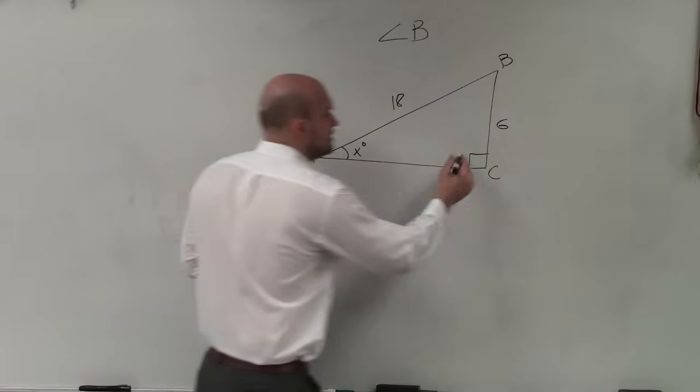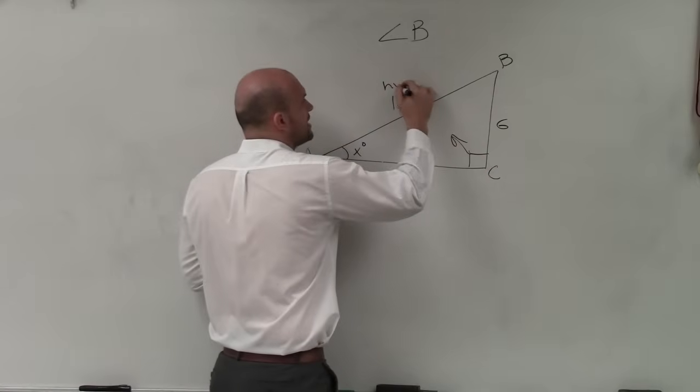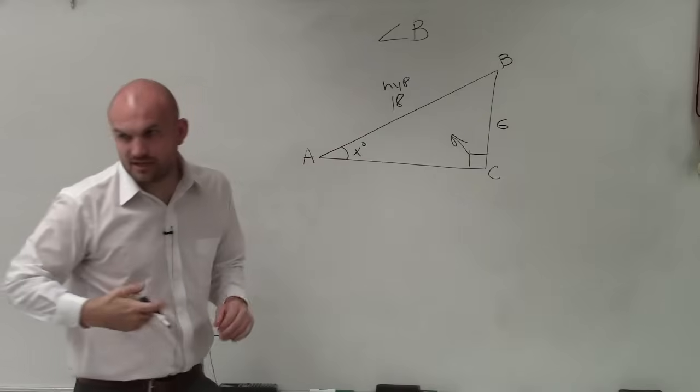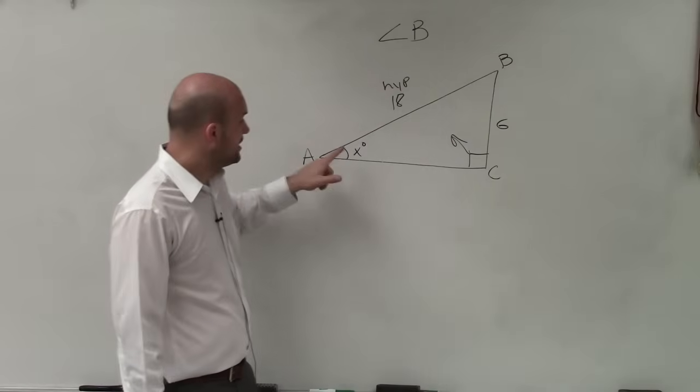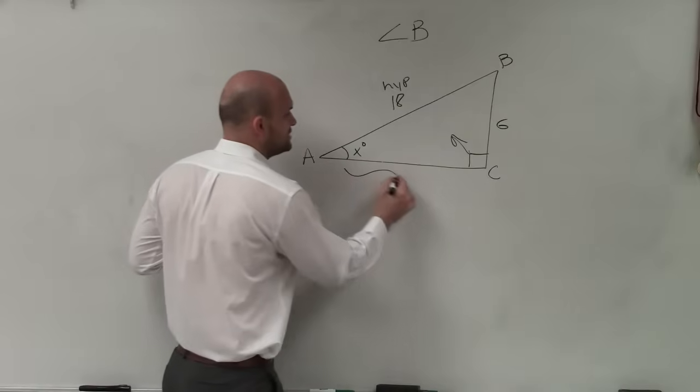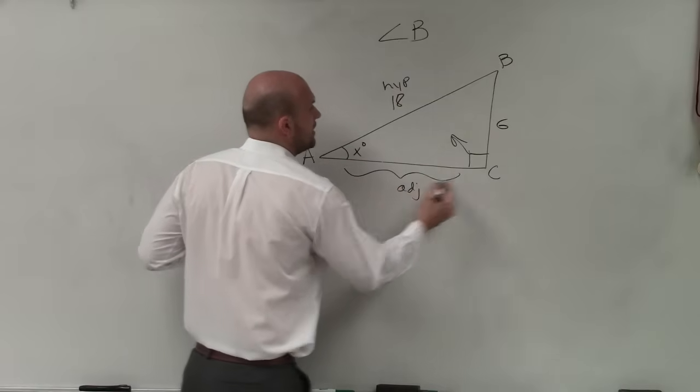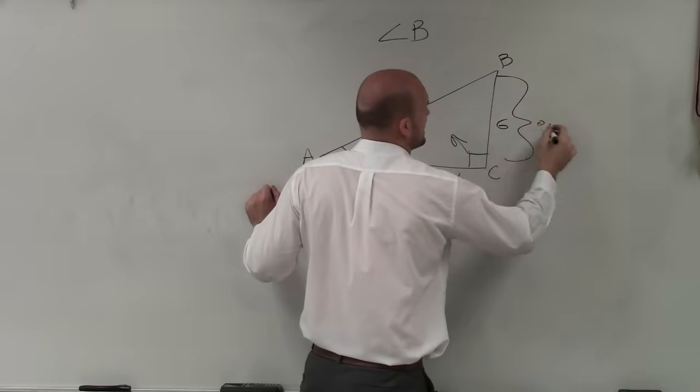So the first thing we can do is label the triangle. This isn't that bad, right? Just label the triangle. Hypotenuse. Here's my angle. This would be the adjacent side. And here is my opposite side.